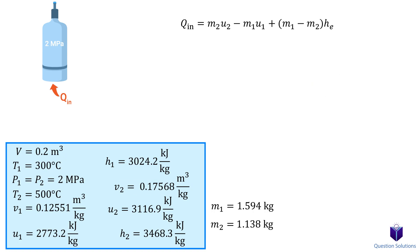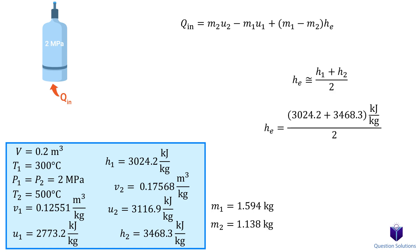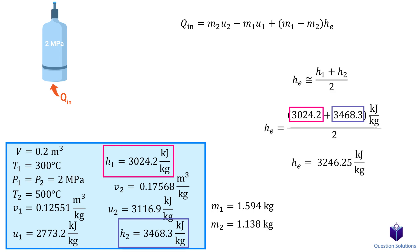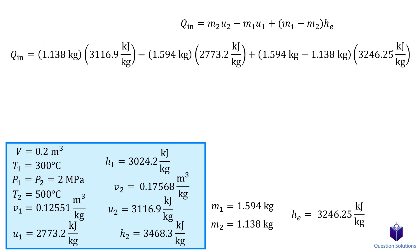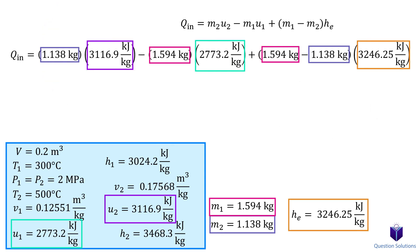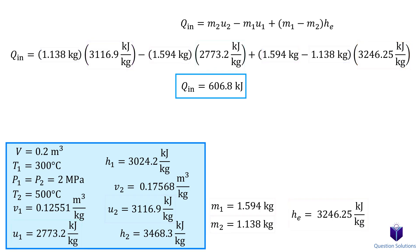Since the enthalpy value is changing during the start and end of the process, we just need the average. We now have everything we need, so let's start plugging in values. Solving tells us that 606 kJ of heat was transferred to the tank.